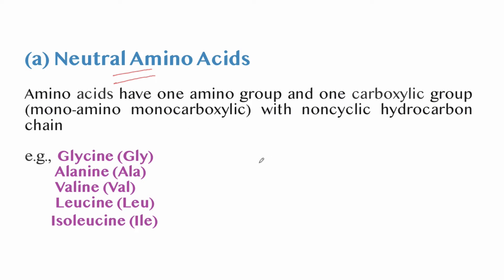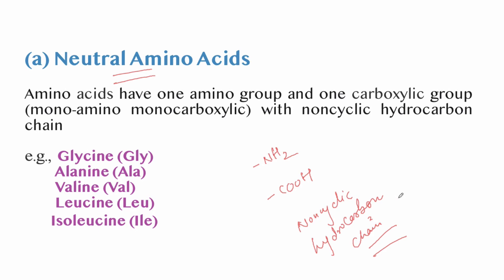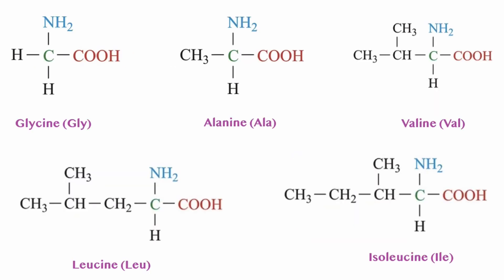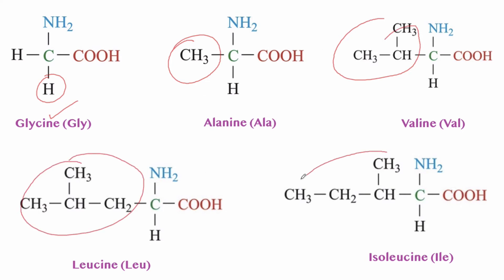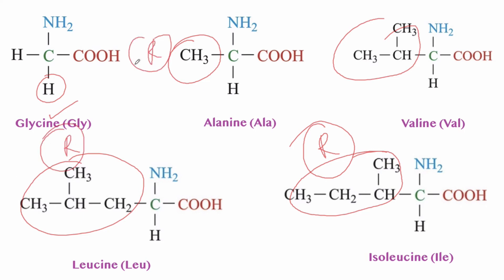The first type is neutral amino acids — they have one amino group and one carboxyl group with a non-cyclic hydrocarbon R group. Examples are glycine, alanine, valine, leucine, and isoleucine. Their R groups (H, methyl, and branched hydrocarbons) are all non-cyclic hydrocarbons, and all have one amino and one carboxyl group.